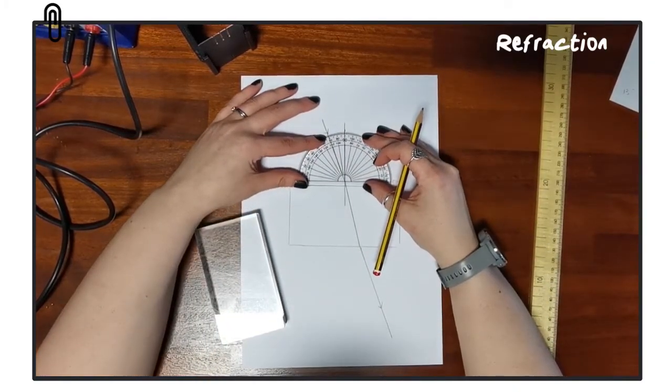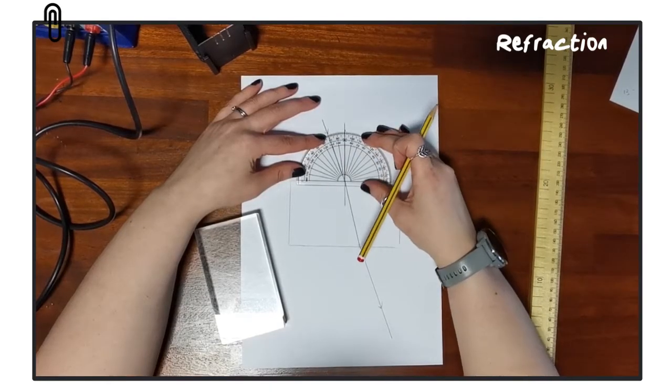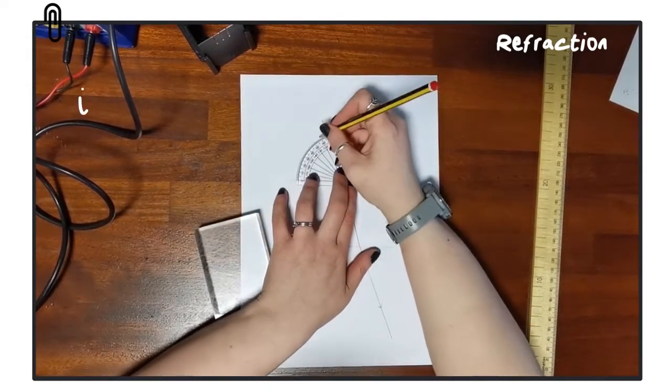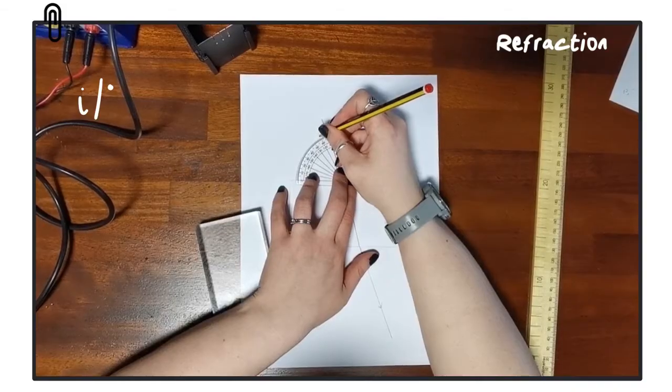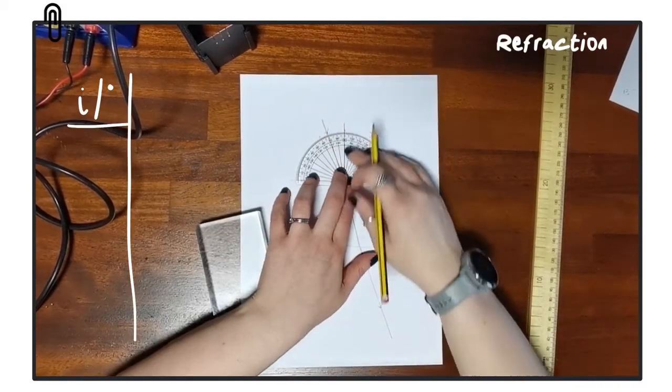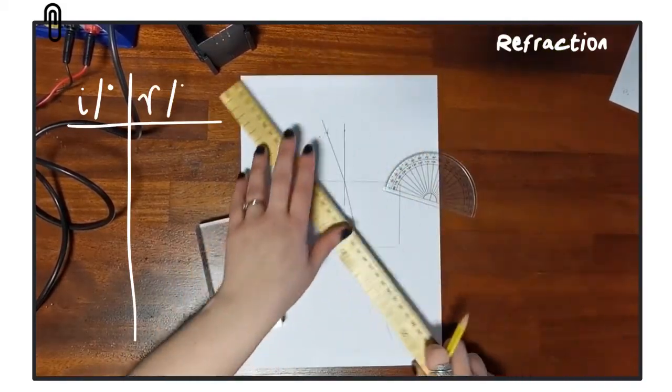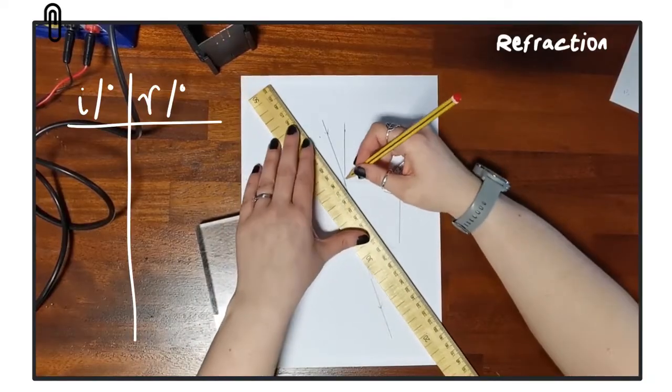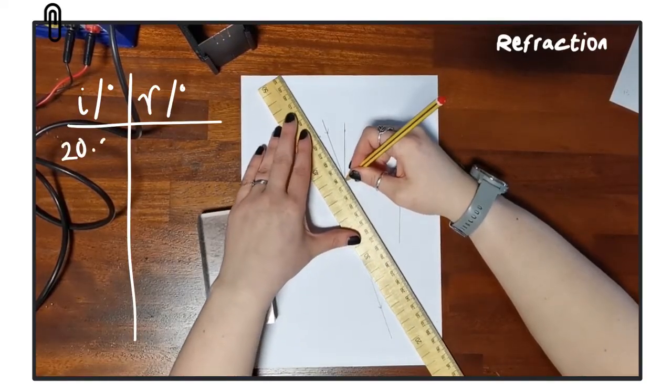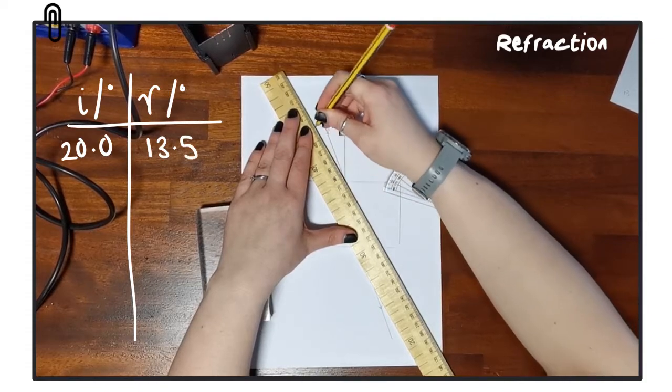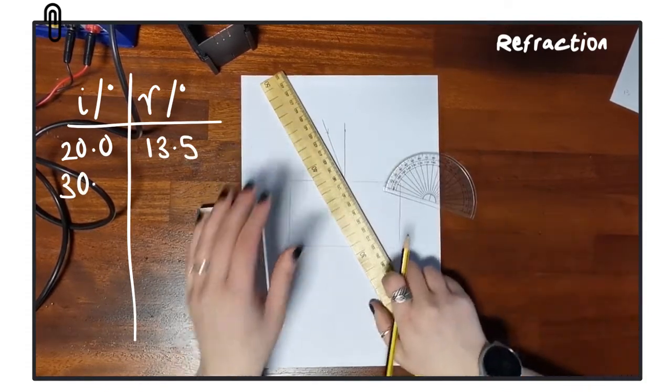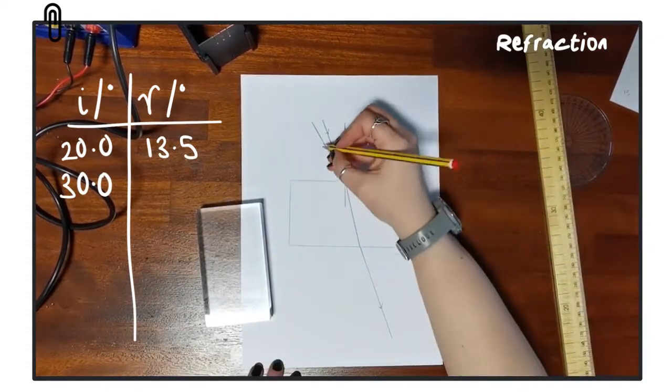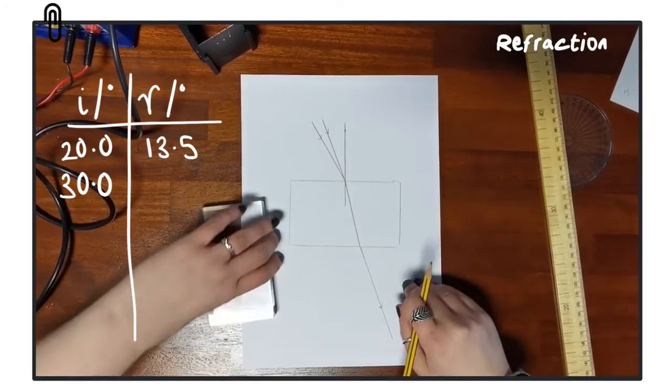So next, we continue this for various angles of incidence. We've already done 20, so now we're going to do 30, 40, 50, and 60, and we repeat this process, marking out where the emergent ray is and then joining the line in between to show where the path went inside the block, and then that allows us to measure the angle of refraction that we need.